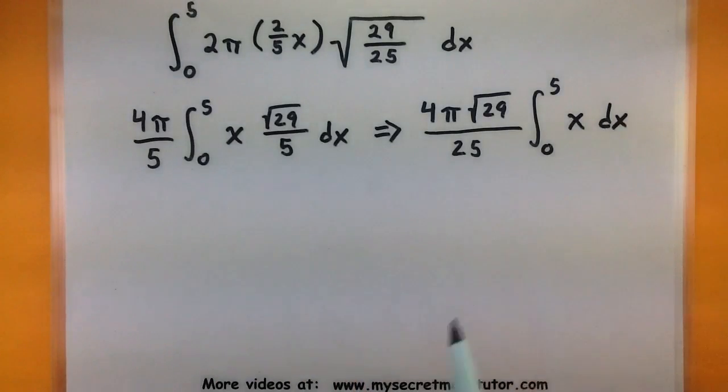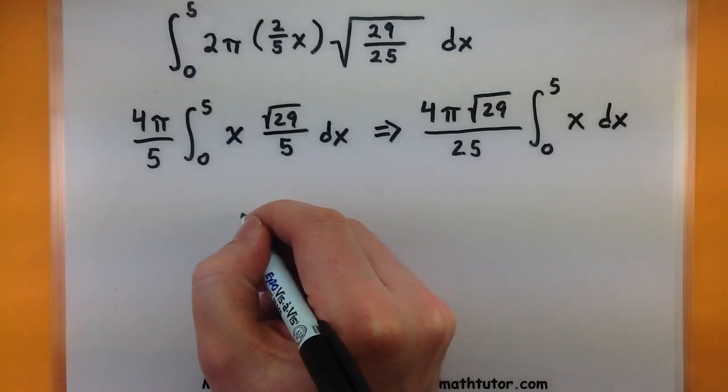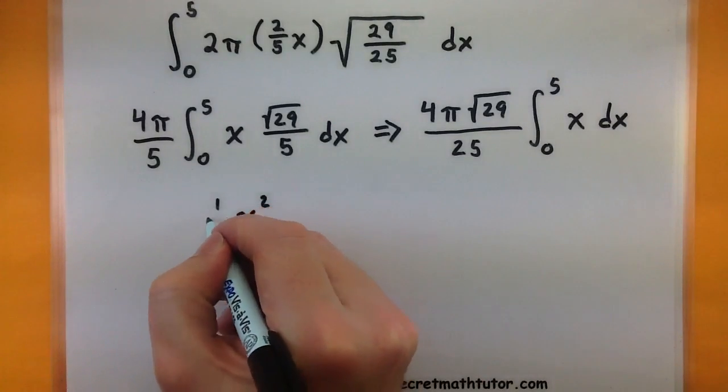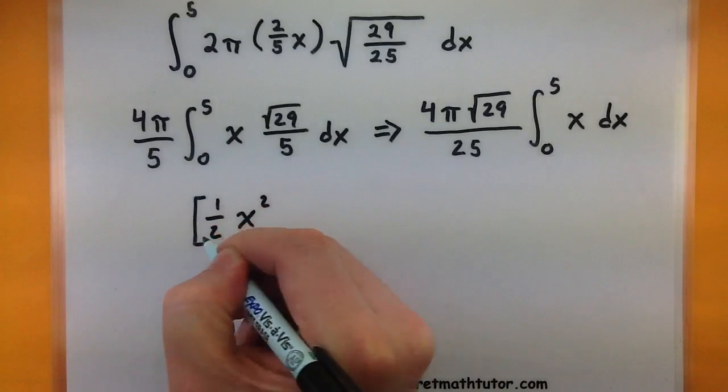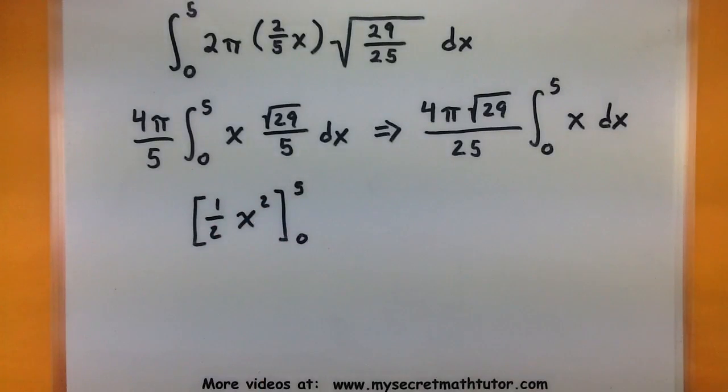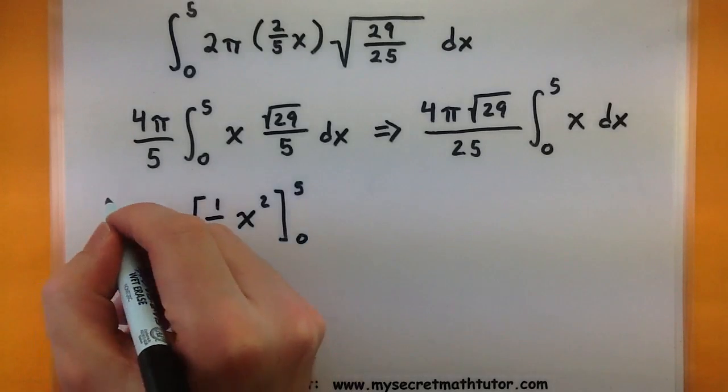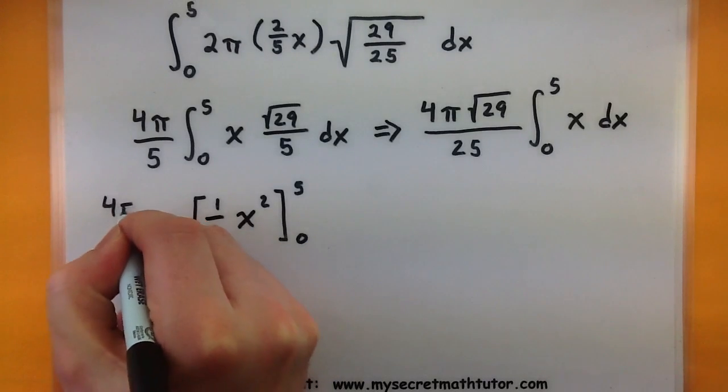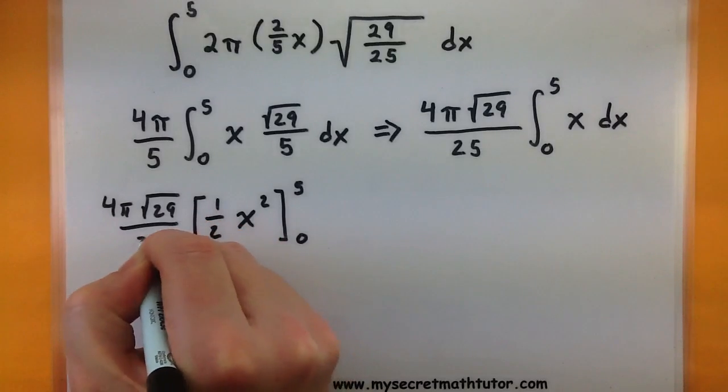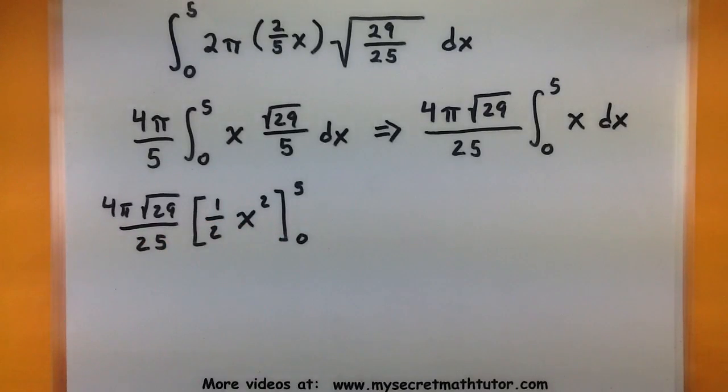So the antiderivative of x, we would add one to the power, giving us x squared, and dividing by that new power. So we'll evaluate this using our bounds from five to zero. And of course out front of all of this is still our four π, our square root of twenty-nine, and our twenty-five. We'll get to that in just a bit.